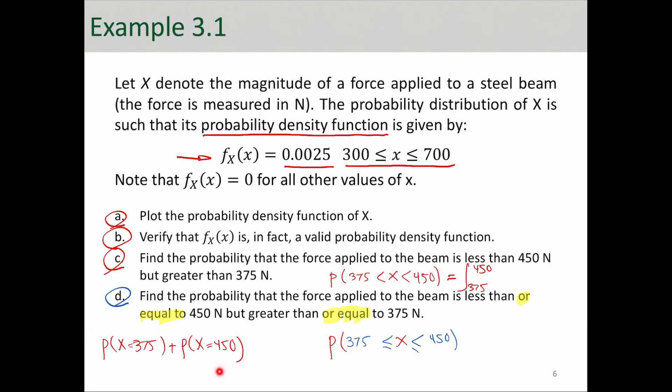The only difference here is that we're adding the probability of X equals 375 and also probability of X equals 450 to this probability that we solved in part C. We're just adding these two to it by saying 'or equal to'. Well, we already know that probability of a single point is 0. So, part D would have the same answer as part C because these two probabilities are equal to 0.